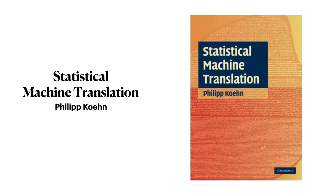The first required textbook for this course is Statistical Machine Translation by Philip Kern. This book is one of two major sources of readings for this course. We will read most of this book over the course of the coming semester. It is essential that you have a copy.